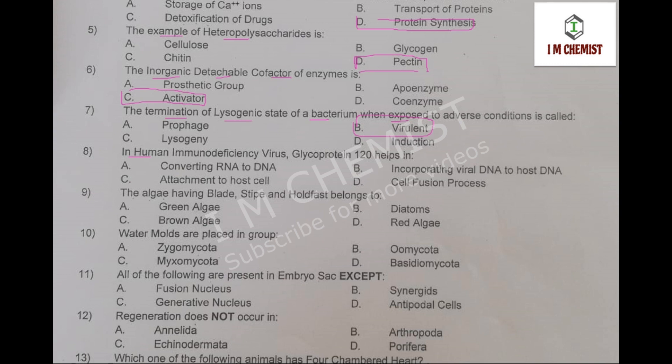MCQ number 8: in human immunodeficiency virus, glycoprotein 120 helps. The basic function of glycoprotein 120 in HIV is that it is used for the attachment to the host cell. That is present at page number 125 of your book, and option number C is correct.